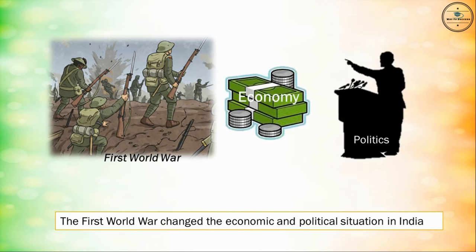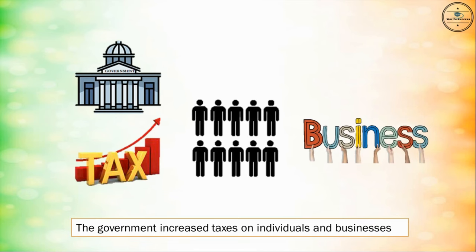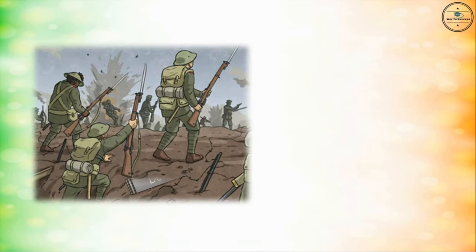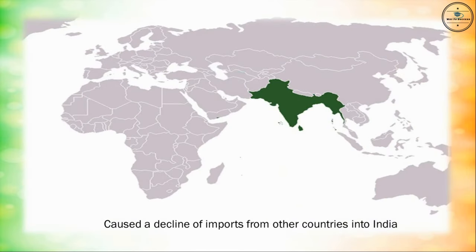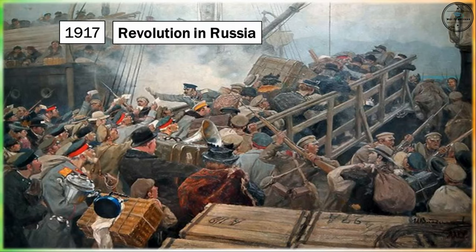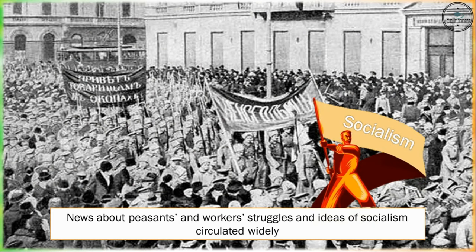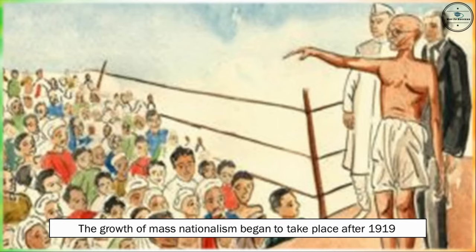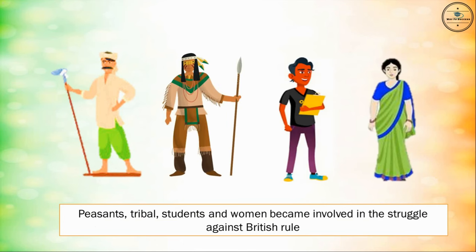The First World War changed the economic and political situation in India. The government increased taxes on individuals and businesses. The prices of all commodities increased, putting the common man into hardship. The war created a demand for industrial goods such as jute bags, cloth, and rails, causing a decline in imports from other countries. In 1917, there was a revolution in Russia. News about peasants' and workers' struggles and ideas of socialism circulated widely. The Russian Revolution made a big impact on the minds of Indian nationalists. The growth of mass nationalism began after 1919, when peasants, tribals, students, and women became involved in the struggle against British rule.